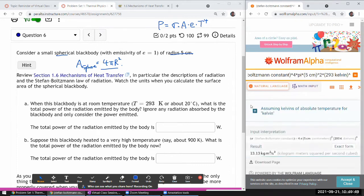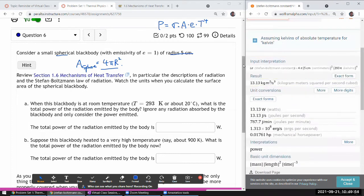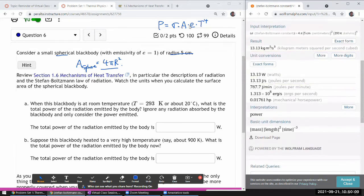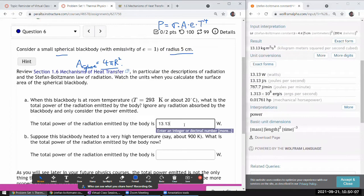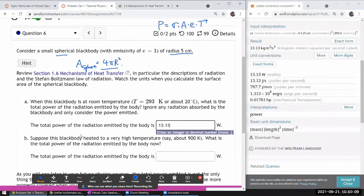Besides unit conversion from 20 degrees Celsius to Kelvin is really easy. So, yeah, it looks like it correctly interpreted what I put in. And I'm putting one for emissivity. And it says, yeah, 13.13 Watt sounds right. 13.13. Doesn't sound crazy.